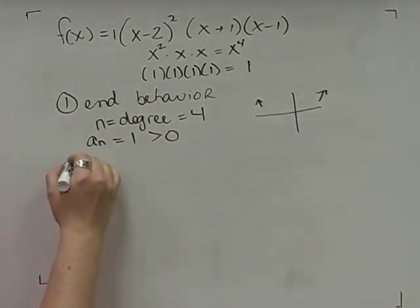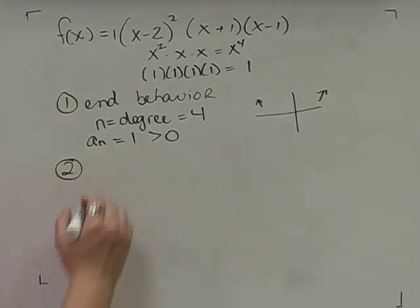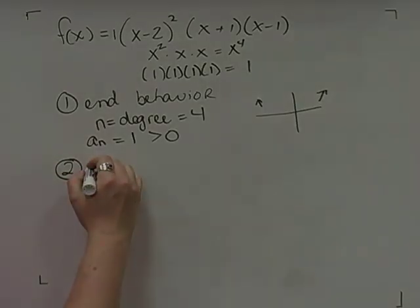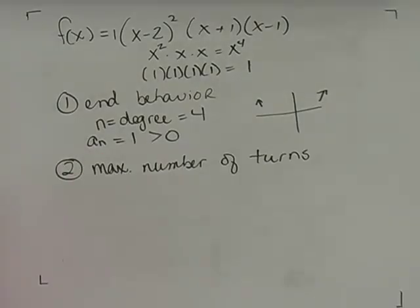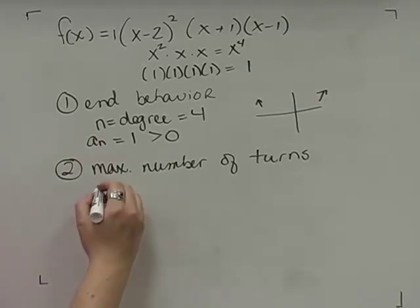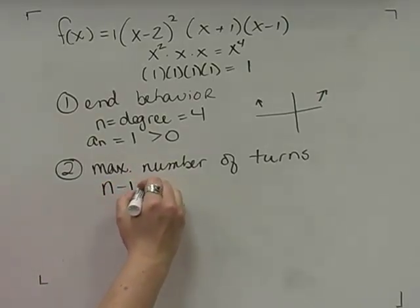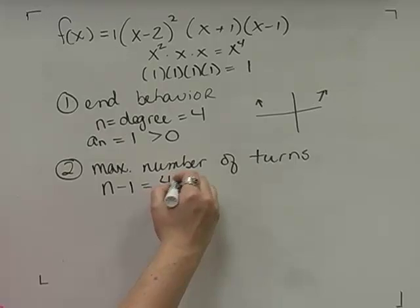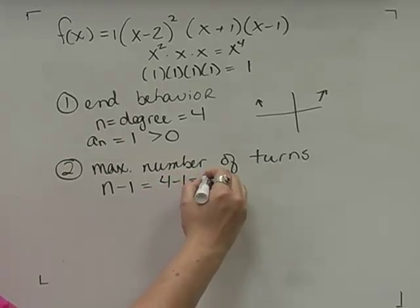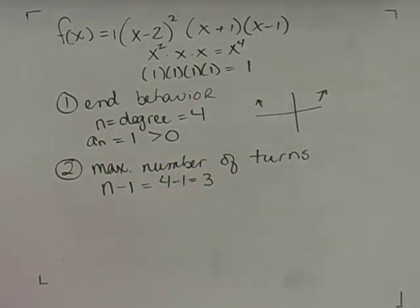The next thing I'm going to do is find the maximum number of turns. To find the max number of turns I take the degree n and subtract 1. So I have 4 minus 1 which is 3. I have at most 3 turns — I'm not guaranteed 3 turns but I know I won't have more than 3.